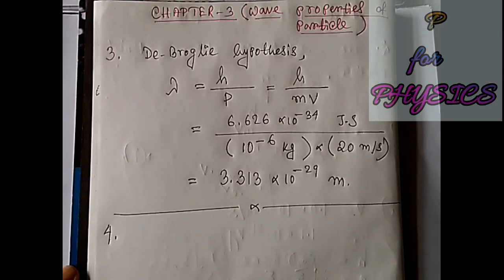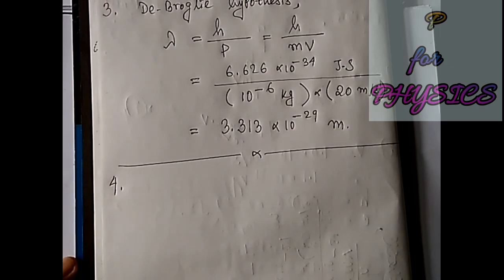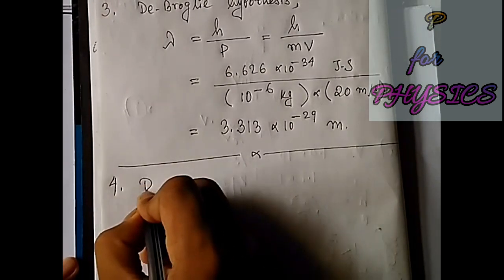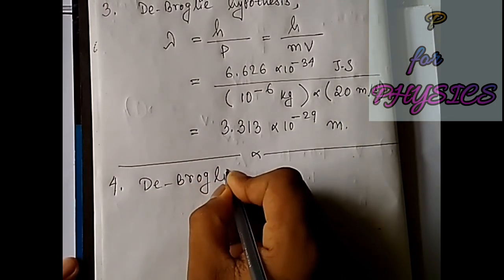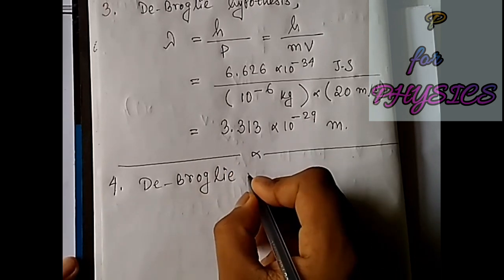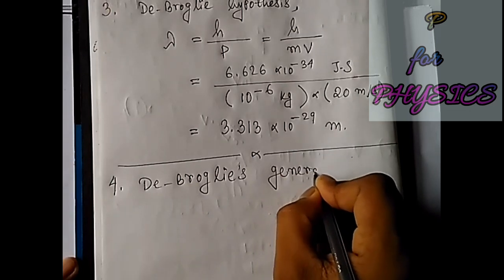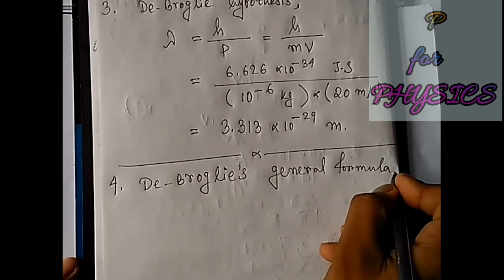How can we do that? If we know the general formula of the de Broglie wavelength, we can find it out. What is the general formula? Let's write it down. I'm writing de Broglie's general formula including relativistic effect.